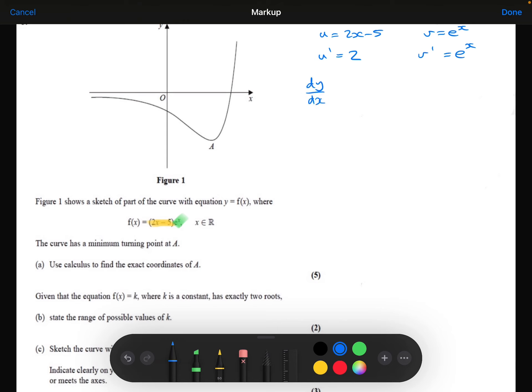So differentiating then, I get u dash times v, plus u times v dash. And that has to equal 0 at point A.